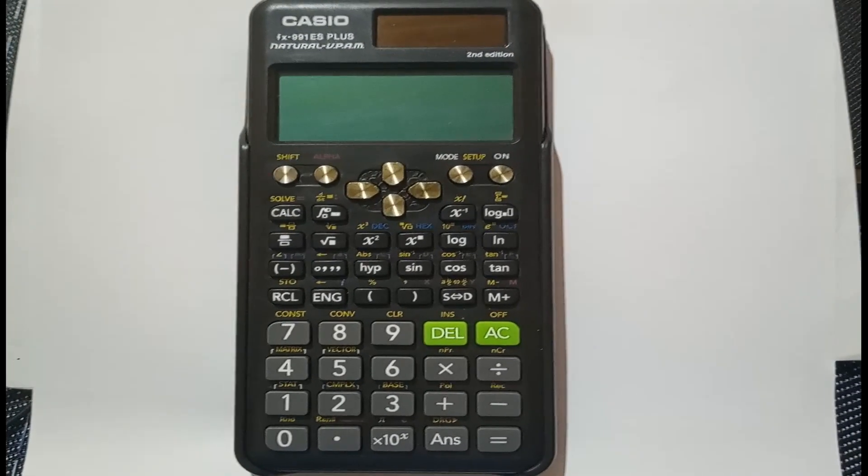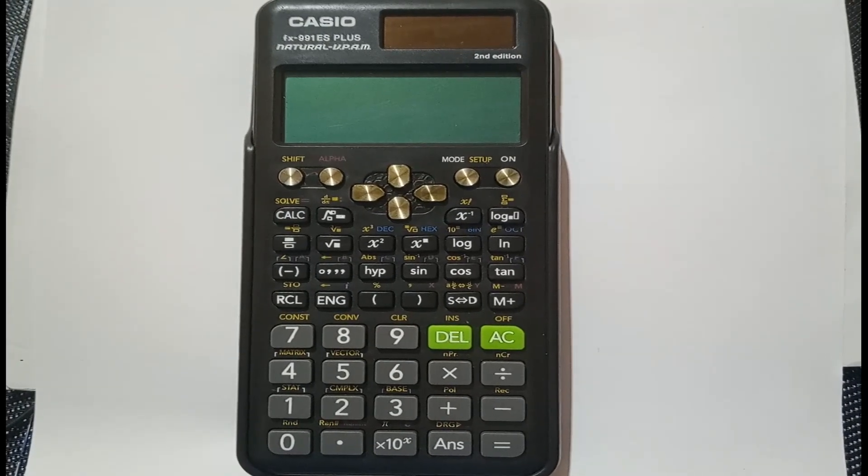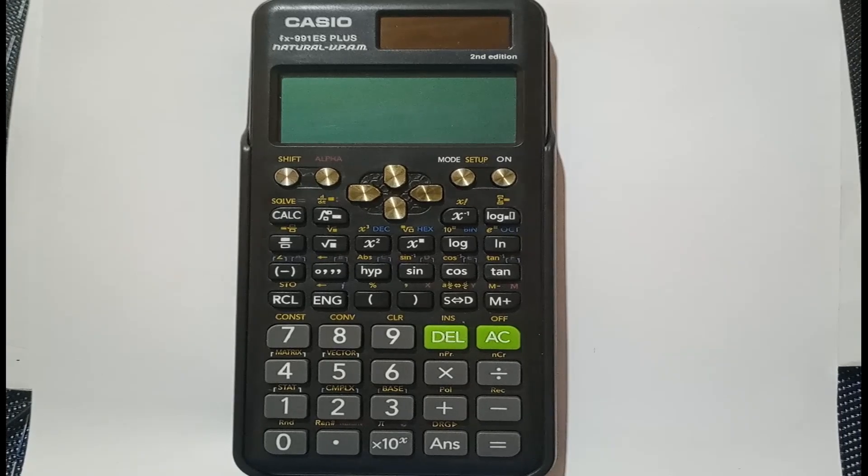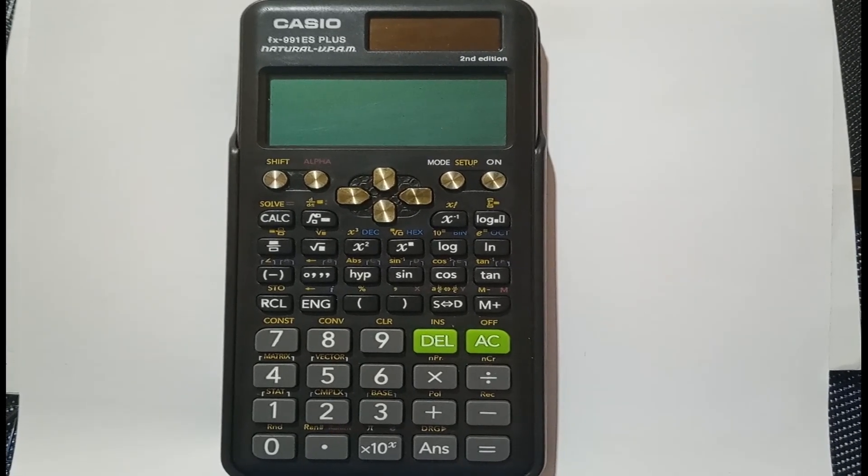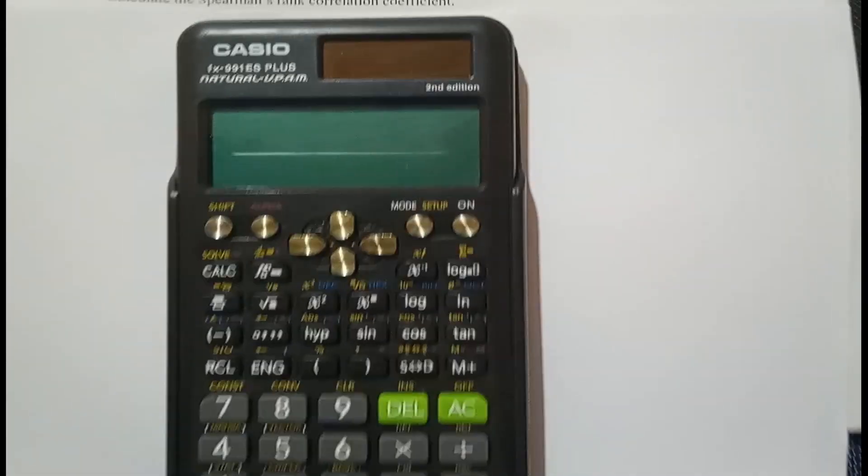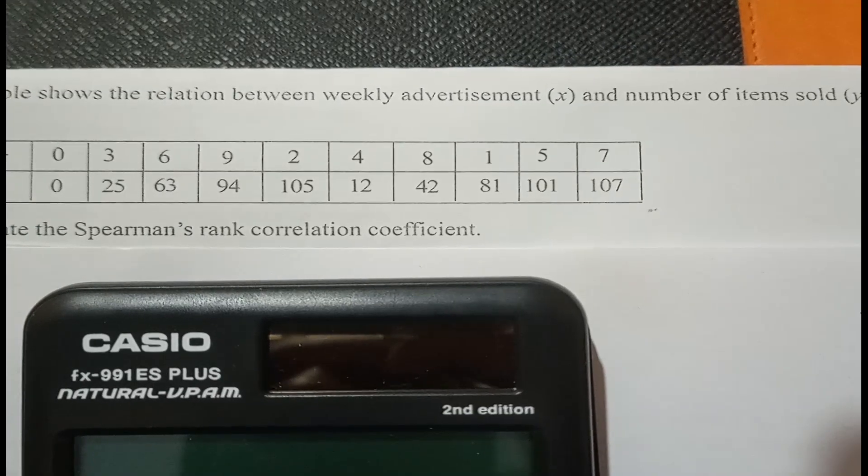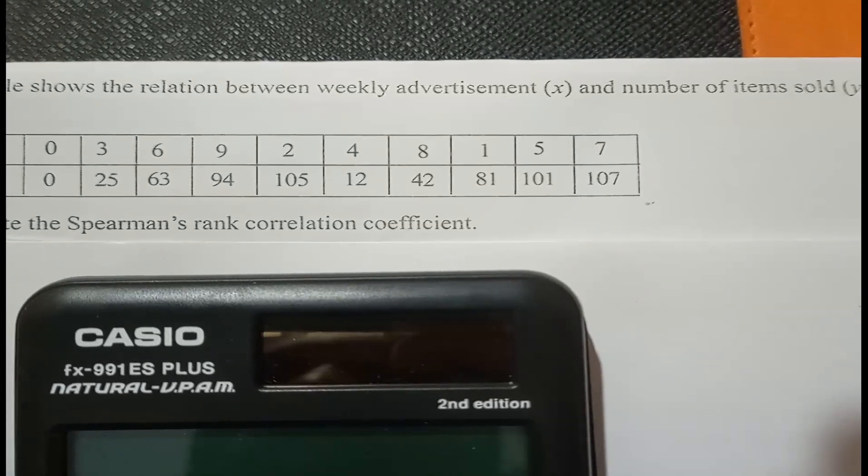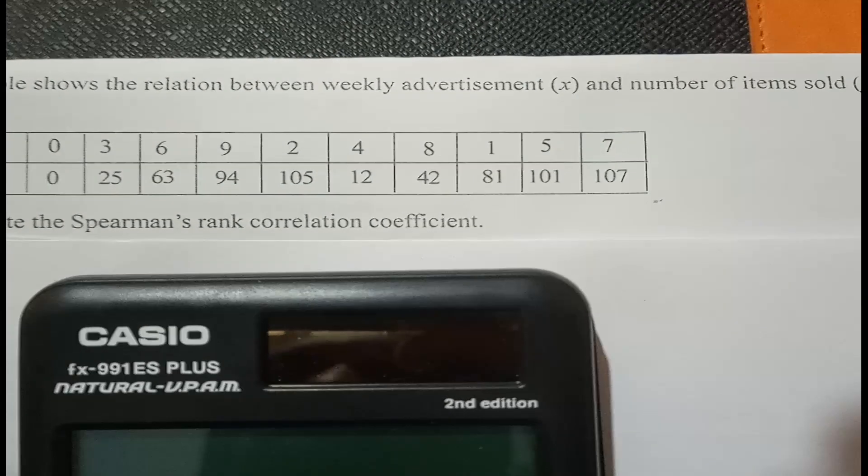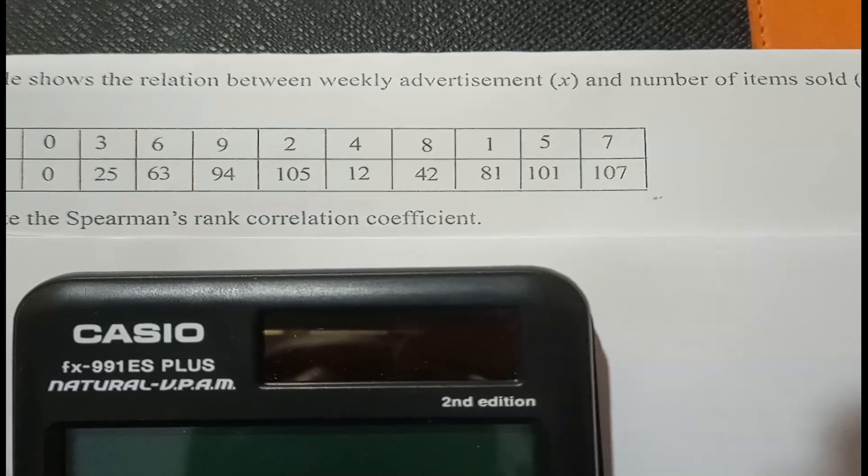Hi, Mr. Chu here. Welcome to my study room. Today we are using Casio fx-991ES Plus second edition to solve correlation and linear regression questions. An example question we have here: the table shows the relation between weekly advertisement x and number of items sold y in a shop.